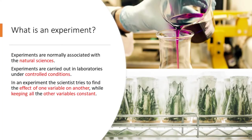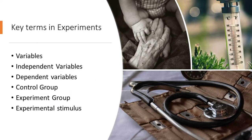Experiment is, in fact, a preferred method in the natural sciences. Experiments are carried out in laboratories, that is, under controlled conditions. In an experiment, the scientist tries to find the effects of one variable on another while keeping all the other variables constant. To understand experiment, you should be familiar with some key terms.